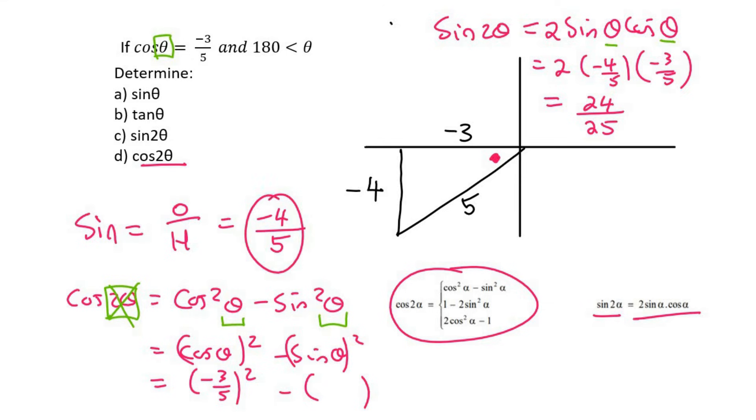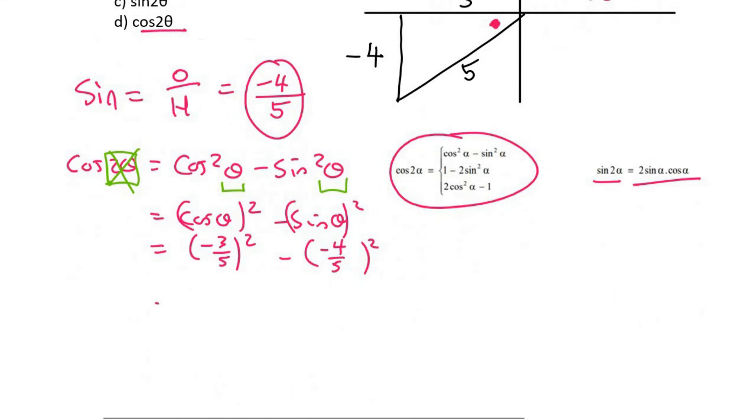And so that's going to give us 9 over 25 minus 16 over 25, and that would give us negative 7 over 25.